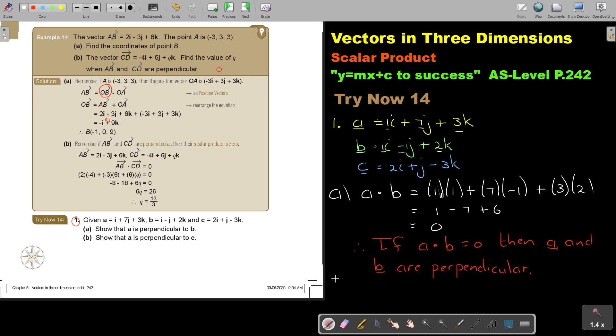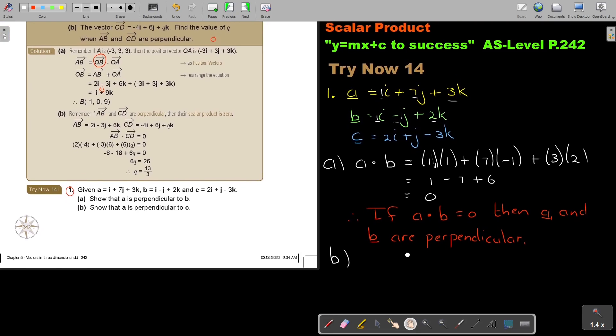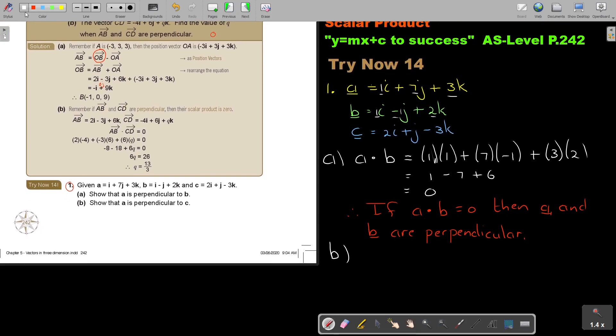And then I will look at number B. Show that A is perpendicular to C. So, it's always the same. So, I'm going to find the scalar product of A and C.